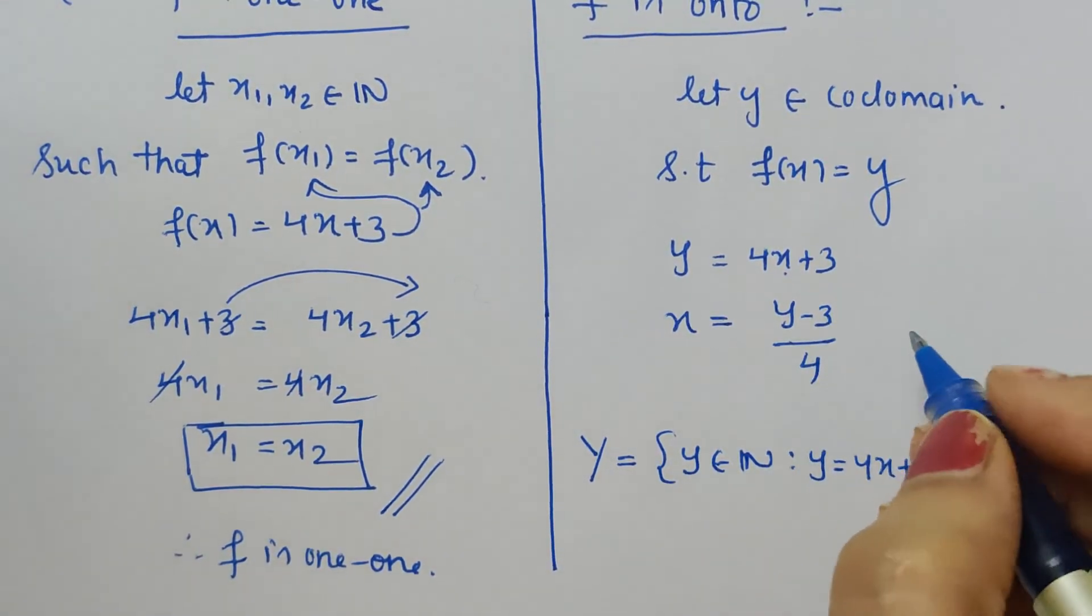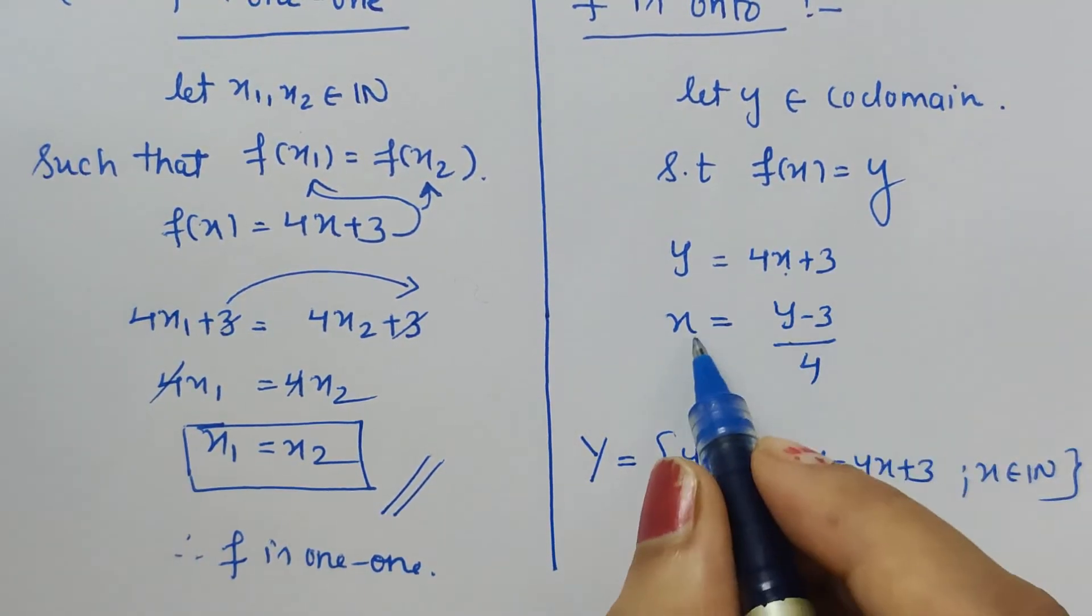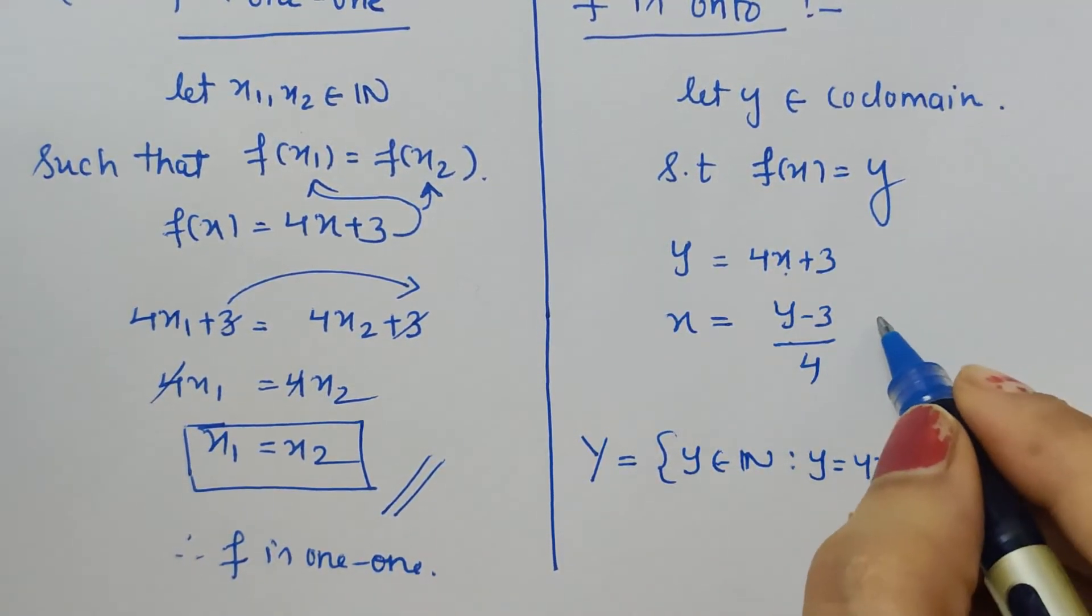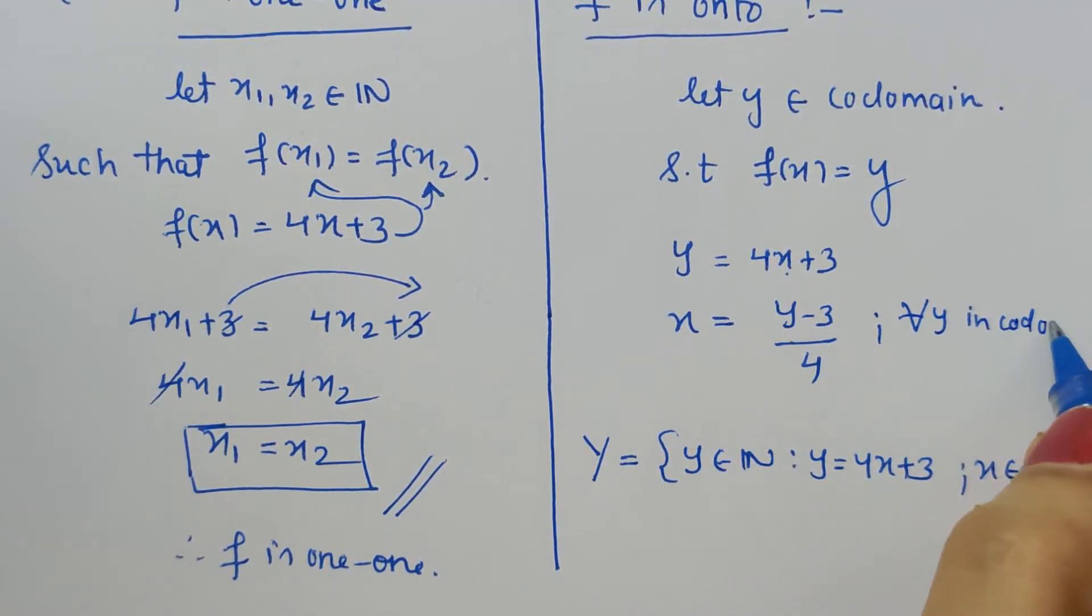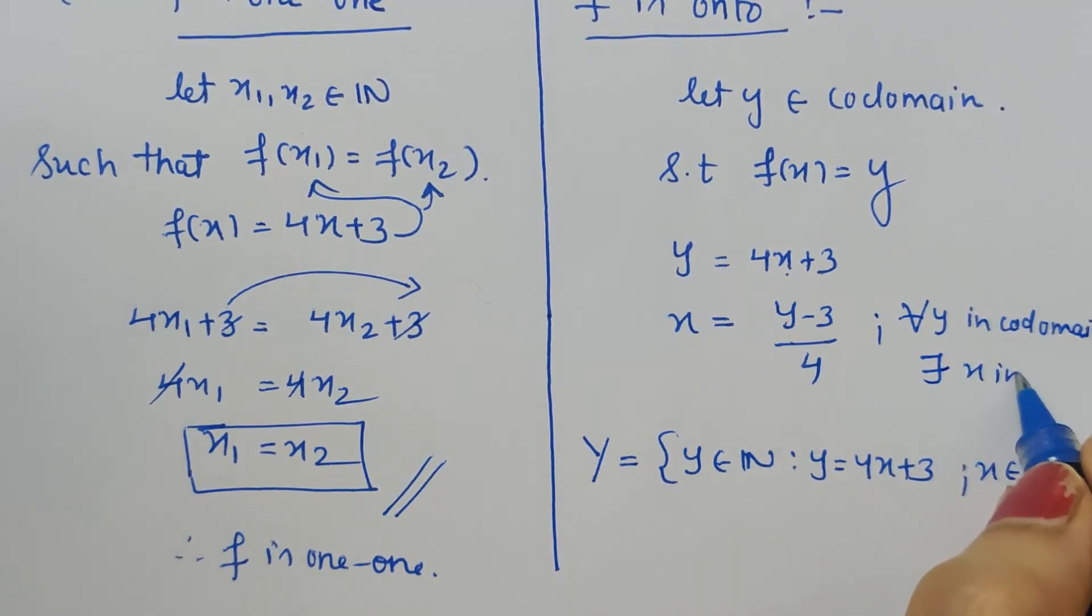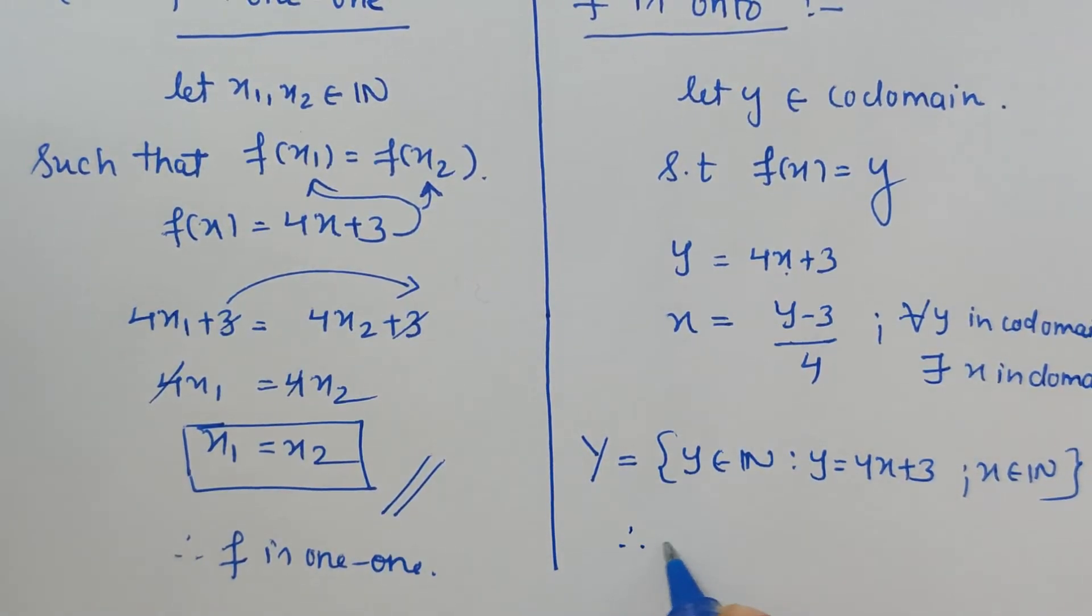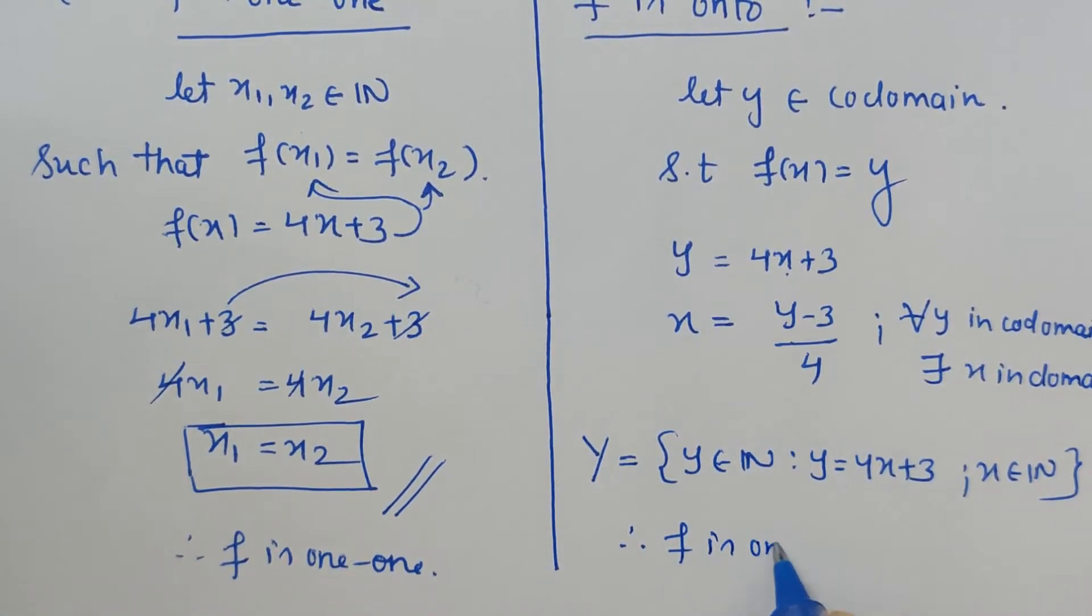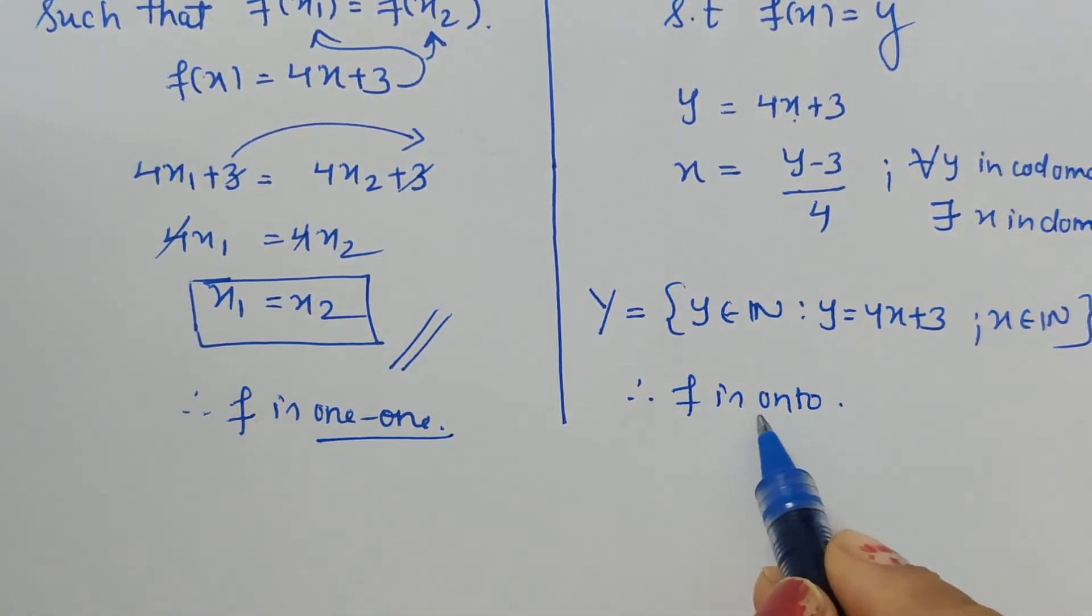So here x is (y minus 3) upon 4. So here what we have to state: for every y in codomain, there exists x in domain. This we have to write. Therefore, the function is onto. And when the function is one-one as well as onto, we can say that f is invertible.